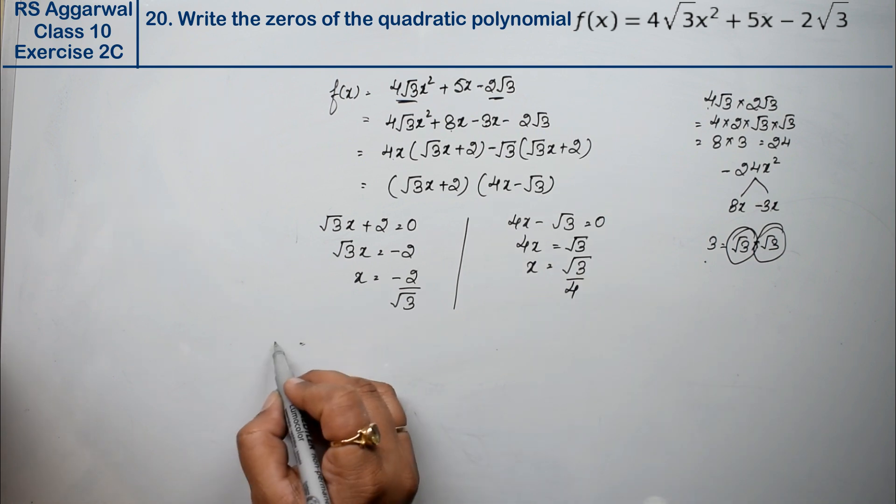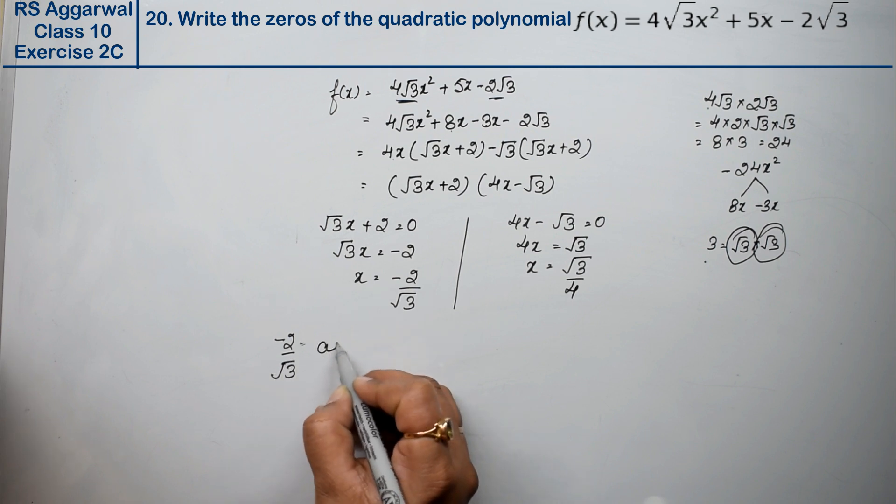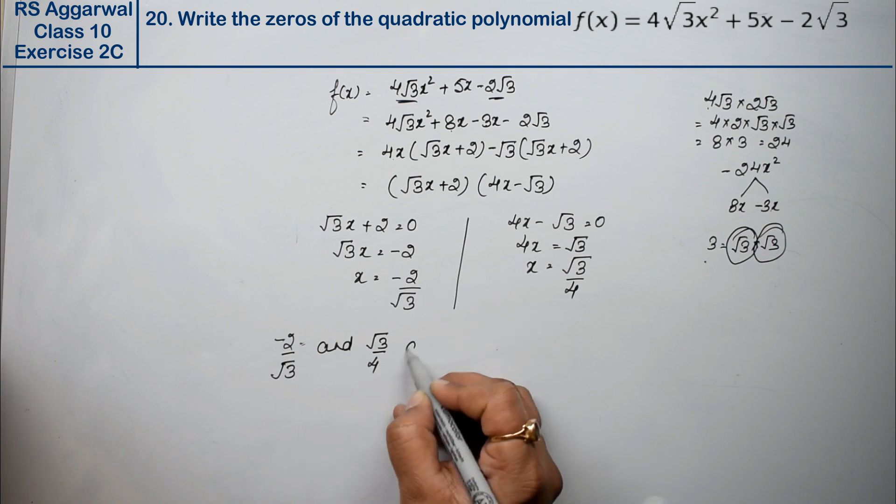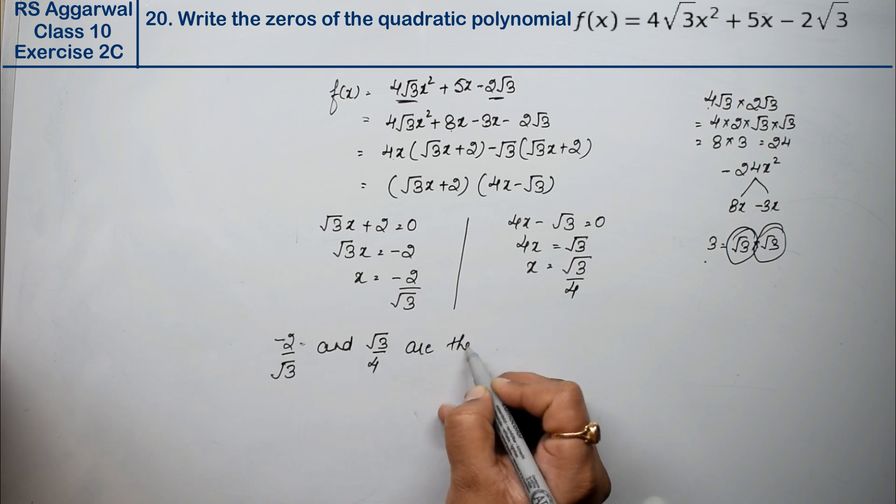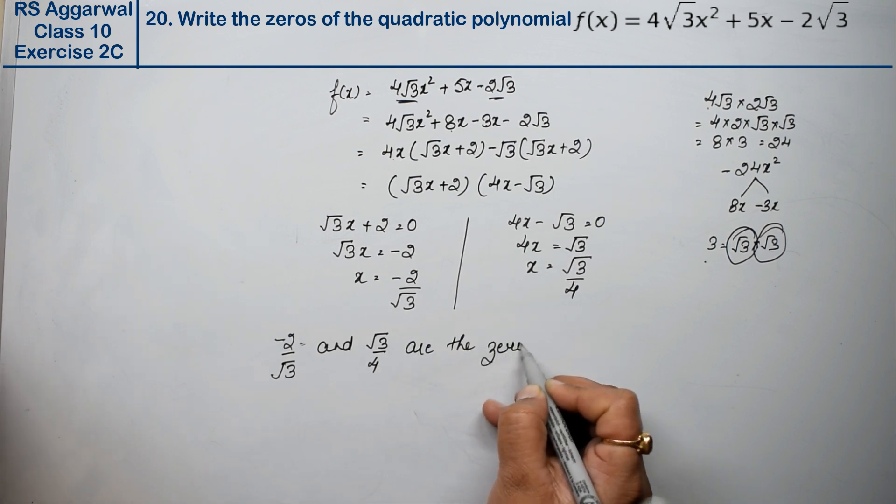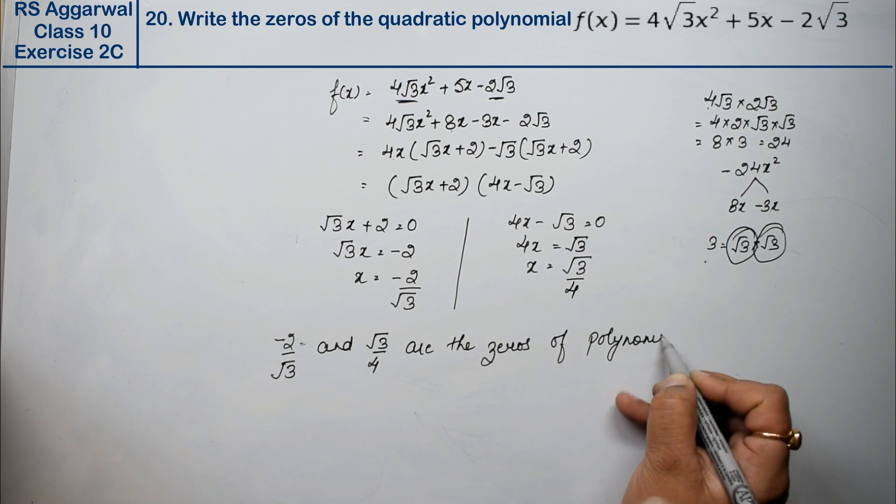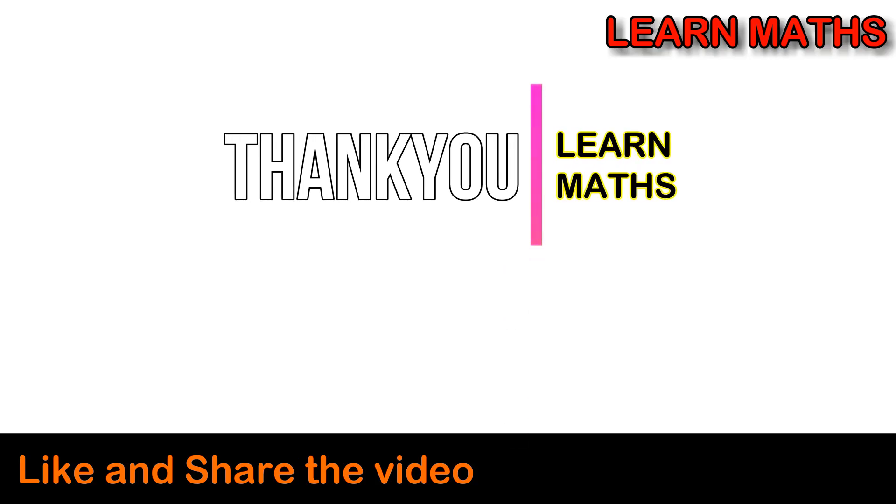So what are our factors? -2/√3 and √3/4 are the zeros of the polynomial. Thank you. If you understand the step-by-step solution of this video, please subscribe my channel Learn Maths and share it with your friends. Thank you.